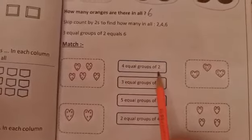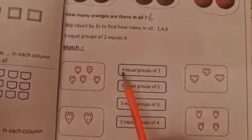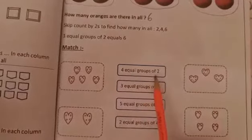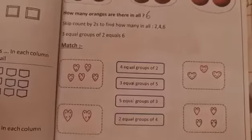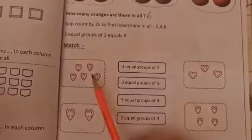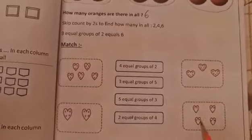So I will read the first one. Four equal groups of two. Which is the box that have four equal groups? Here I have five, two, three, so this is four.